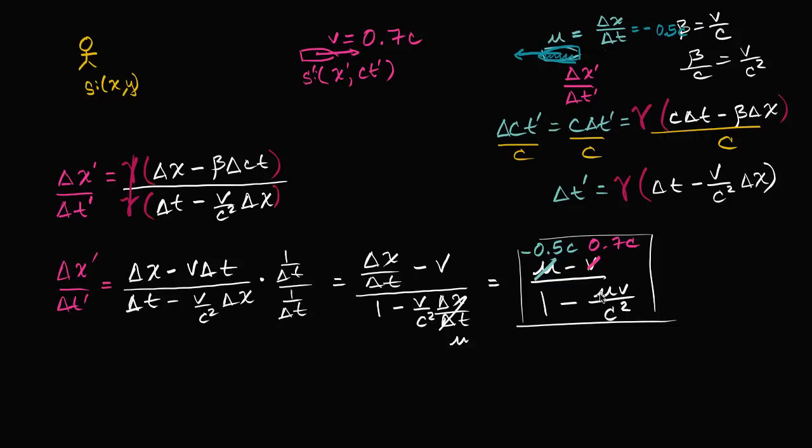And then on top of uv over c squared. So once again, u is negative 0.5c. And then v is 0.7c. So what is this going to be equal to?